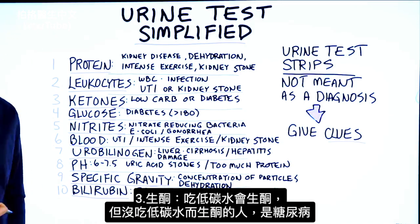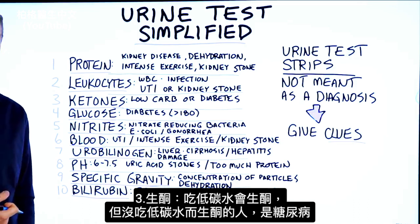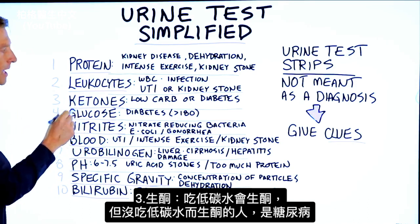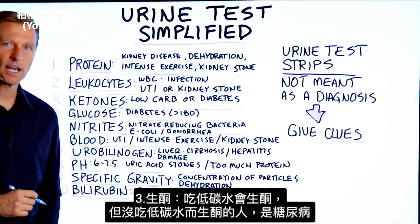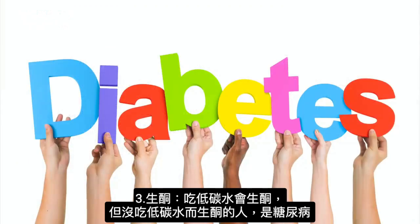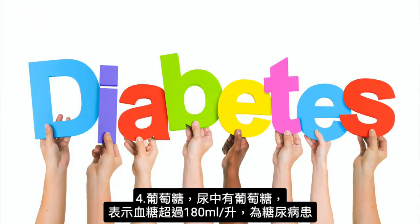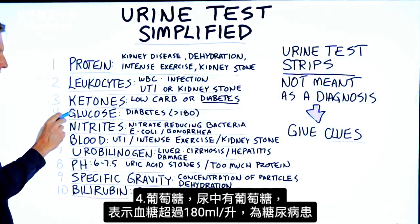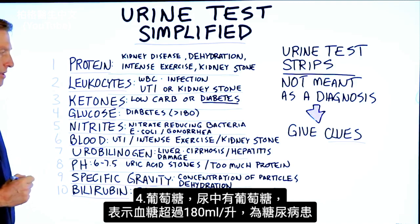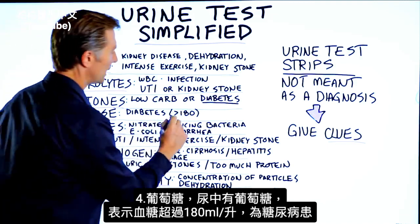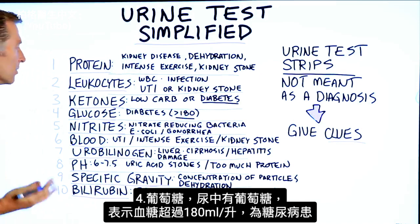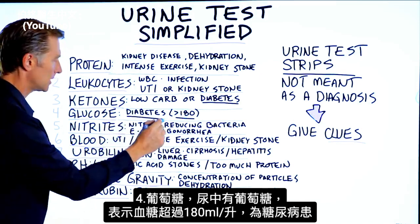Number three, ketones. If you are on a low-carb diet, then ketones will show up. But if you're not on a low-carb diet and you have ketones, that would mean you have diabetes. Number four, glucose — if glucose shows up in your urine, that means your blood sugars are over 180 milligrams per deciliter, which would indicate you're diabetic.